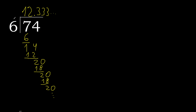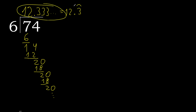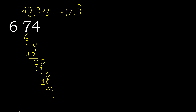74 divided by 6 is here — 12, and after the point, 3 repeating. Like this, or like this — the 3 repeats. Finish it like this, or like this.